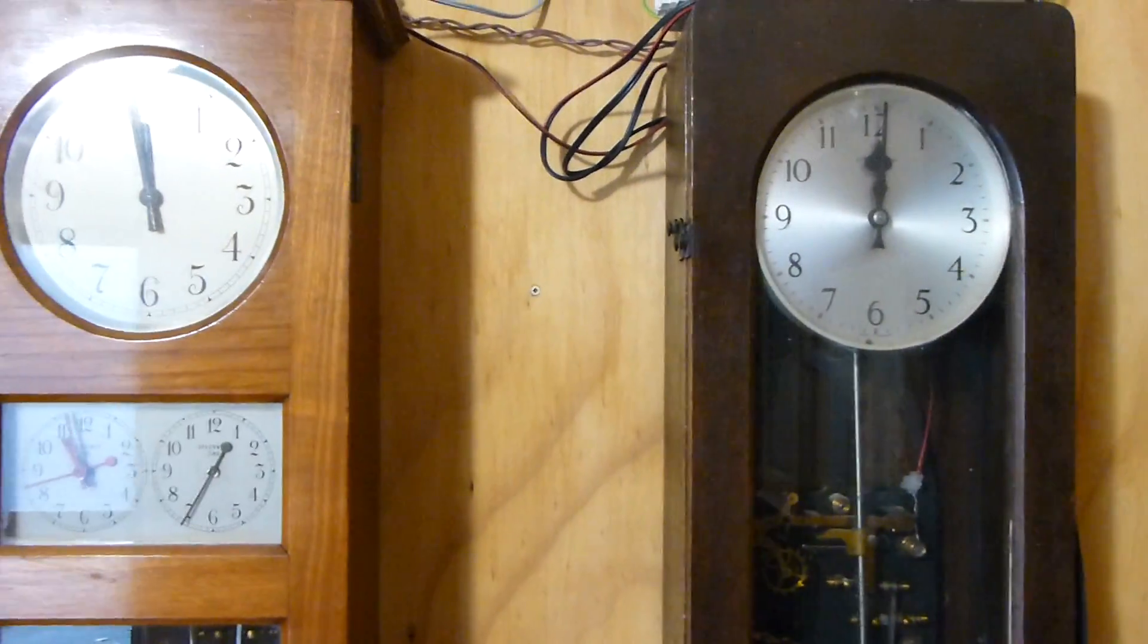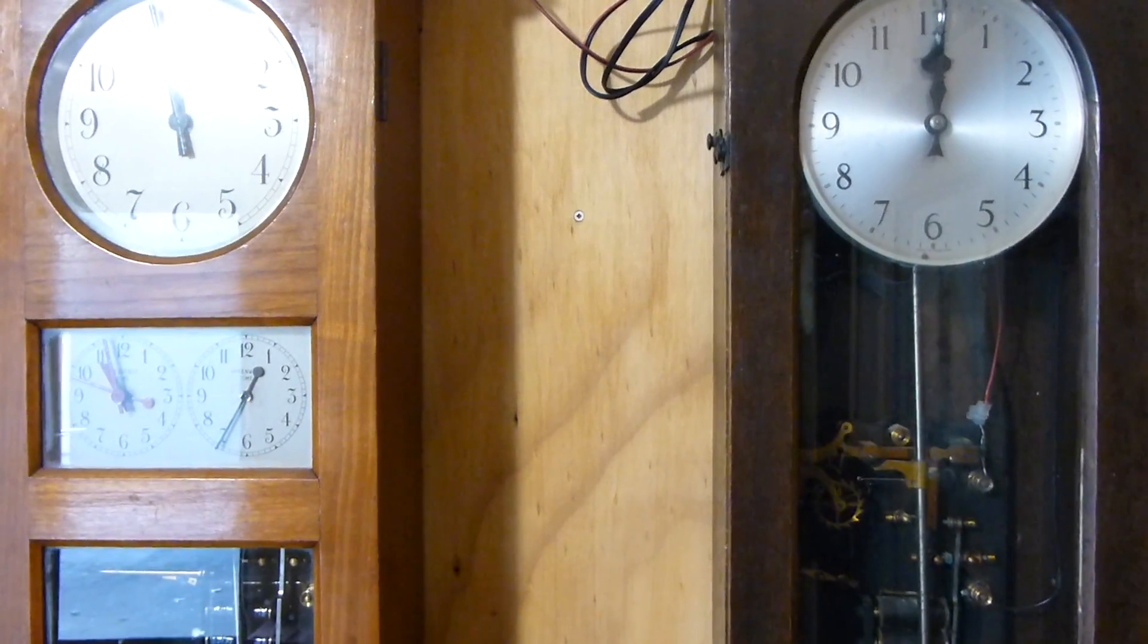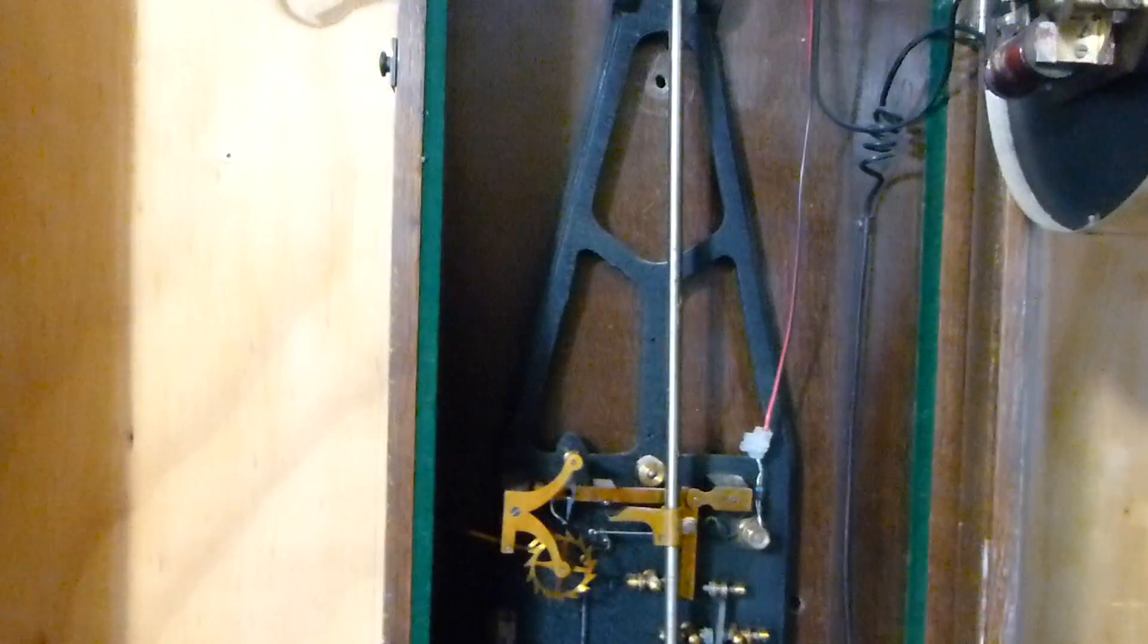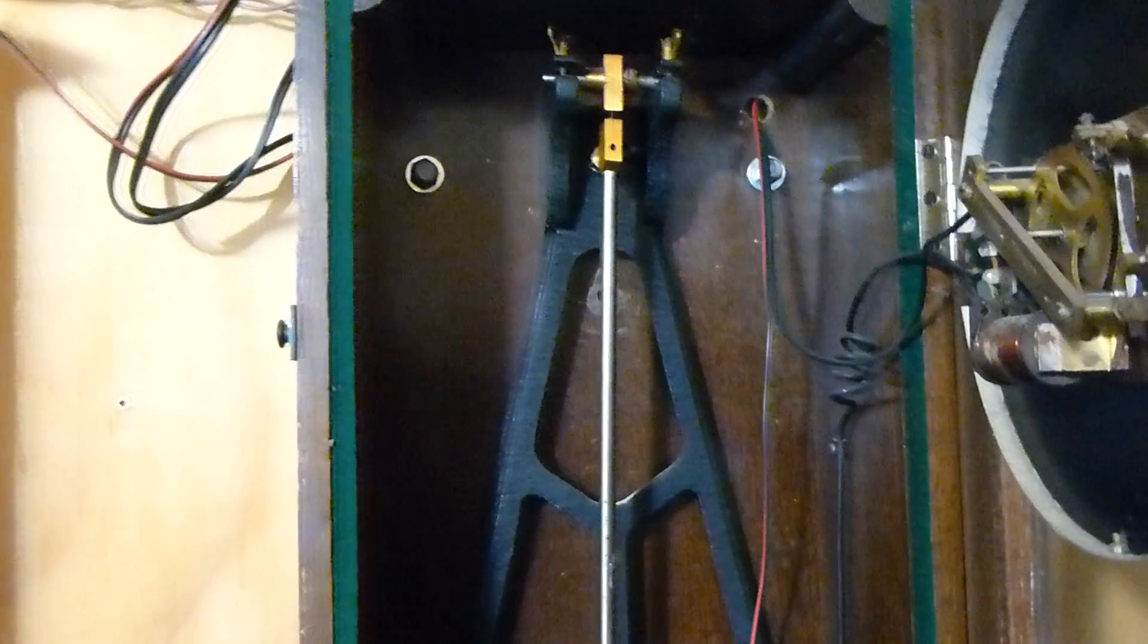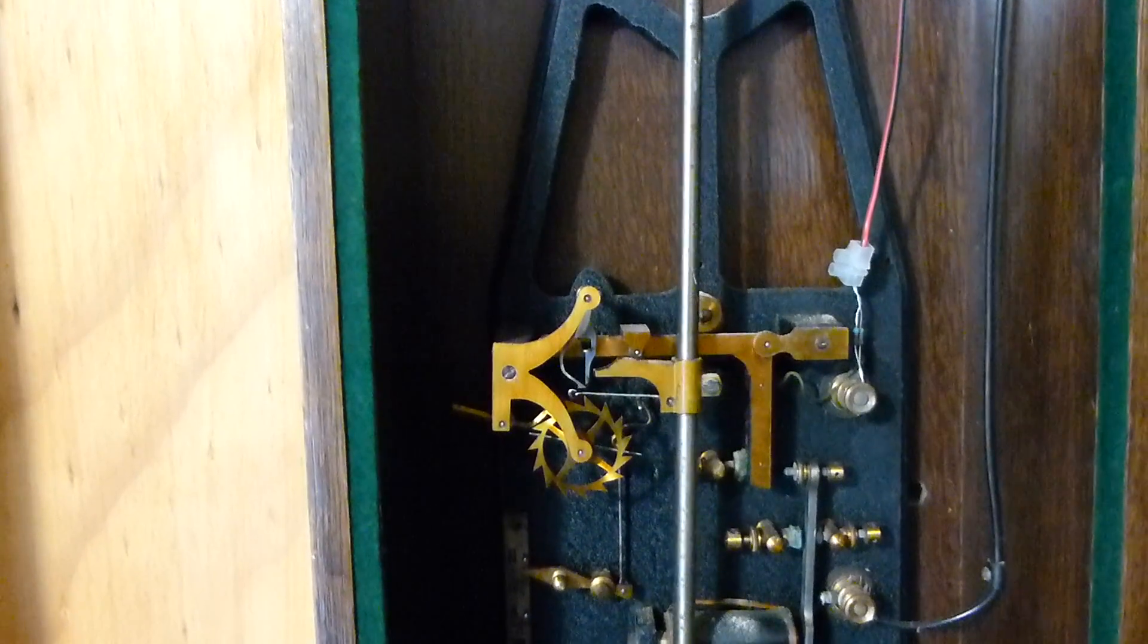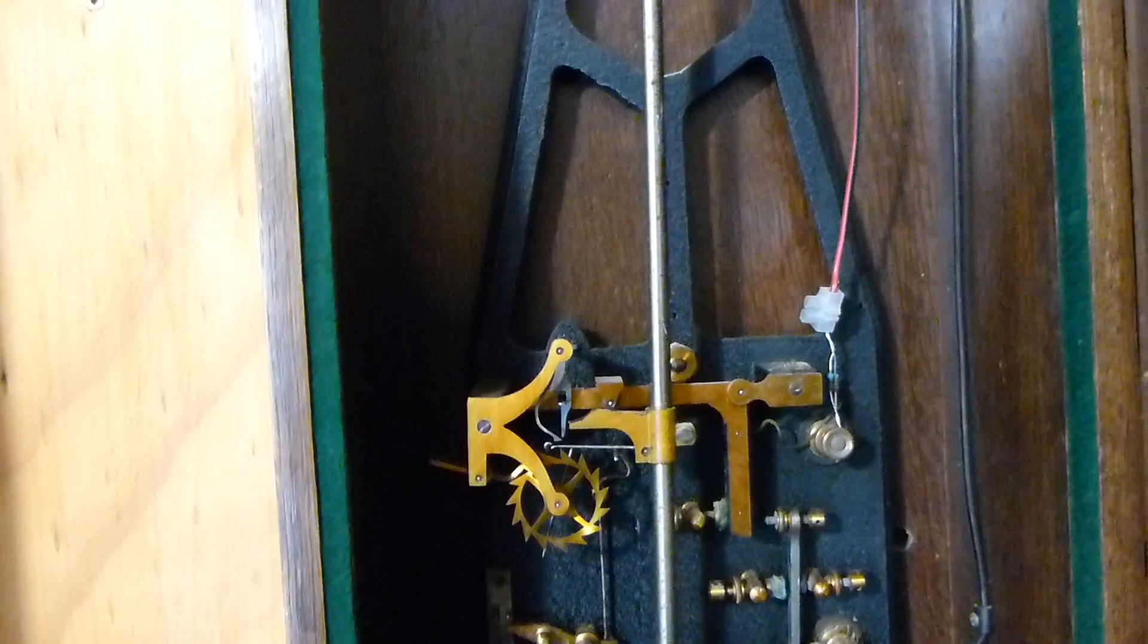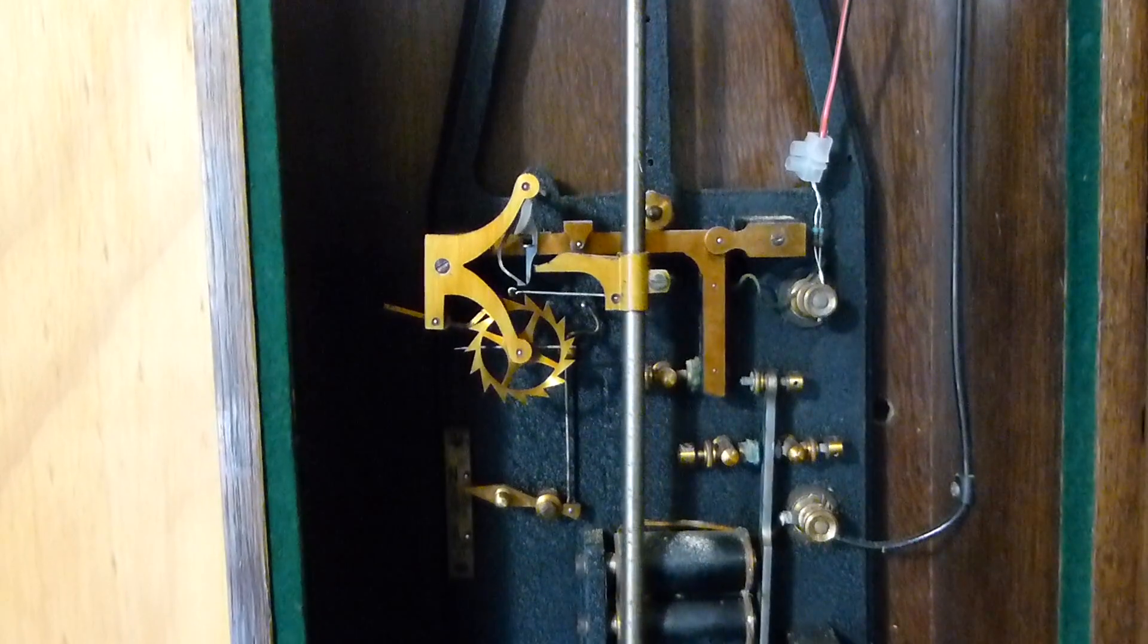These two clocks here are synchronomes, both very similar motion works but different clocks. This is a normal synchronome. When I say normal, one of the more common synchronomes. Quite finicky to get going and I haven't found them to be good timekeepers. They'll go well for a month or two or three and then suddenly gain or lose for no apparent reason. But they're quite sought after and more valuable than most of the other ones that I've got in the collection.